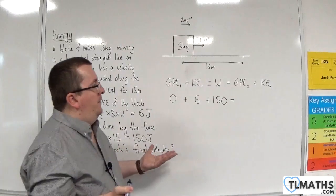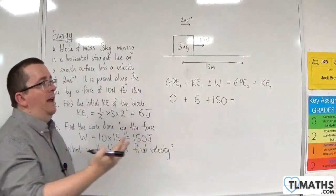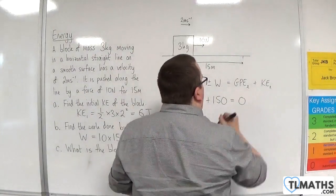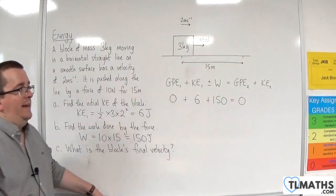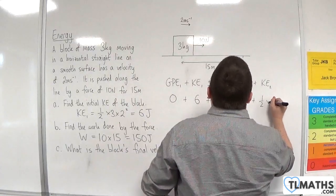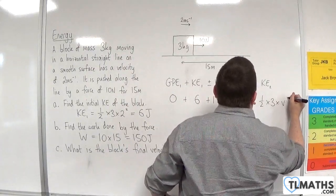The gravitational potential energy final, well as I said, it hasn't moved vertically, and so that is zero. And the kinetic energy final is one-half times m times v squared.